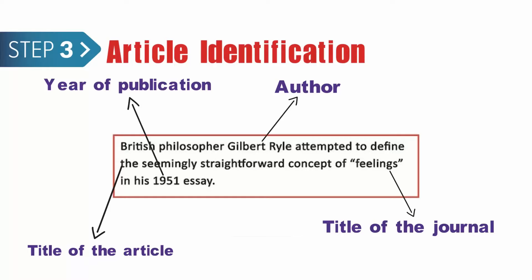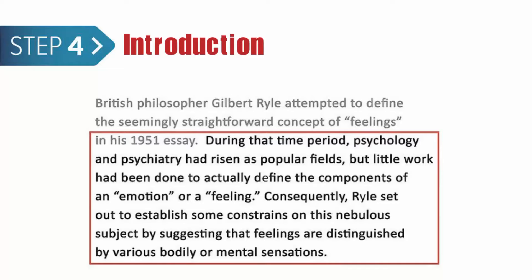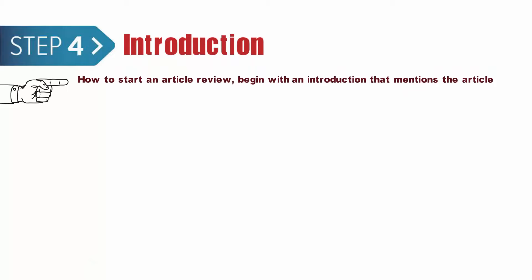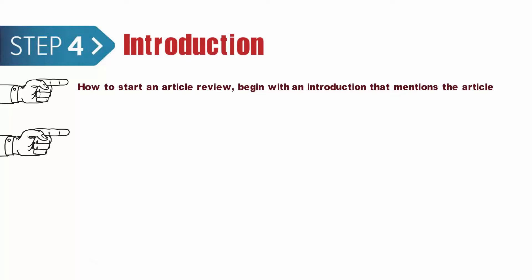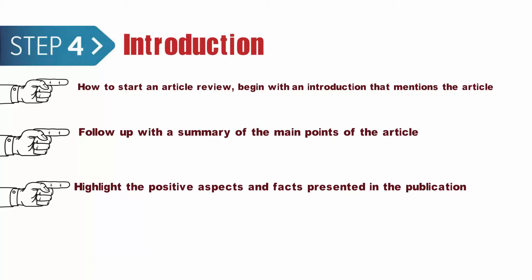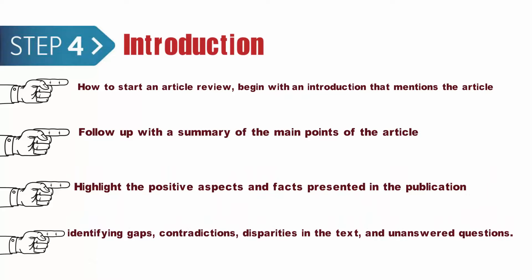Step 4: Introduction. Your organization in an assignment like this is of the utmost importance. Before embarking on your writing process, you should outline your assignment or use an article review template to organize your thoughts coherently. 1. Begin with an introduction that mentions the article and your thesis for the review. 2. Follow up with a summary of the main points of the article. 3. Highlight the positive aspects and facts presented in the publication. 4. Critique the publication by identifying gaps, contradictions, disparities in the text, and unanswered questions.